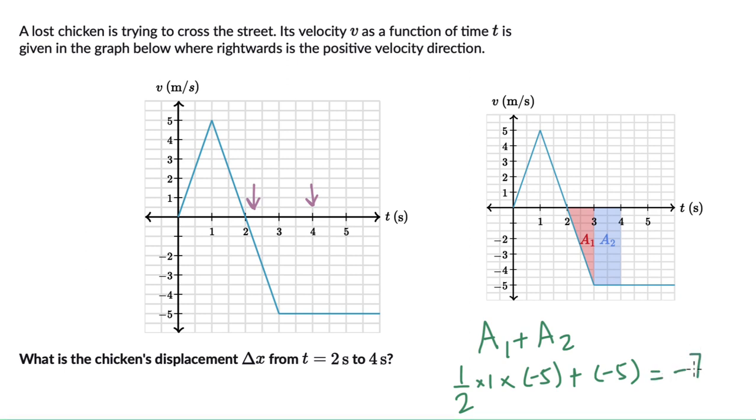So this is really minus 7.5 meters. The significance of the negative sign here is that the chicken's displacement is to the left, because the question says rightwards is the positive velocity direction. So minus 7.5 means the distance travelled is 7.5 meters, but it is leftwards.